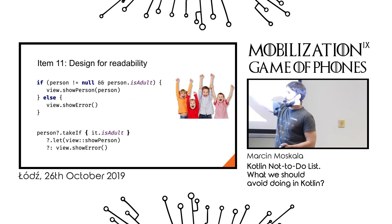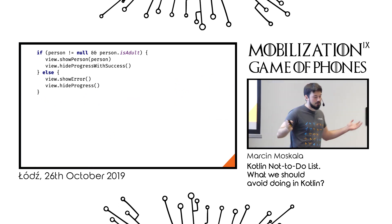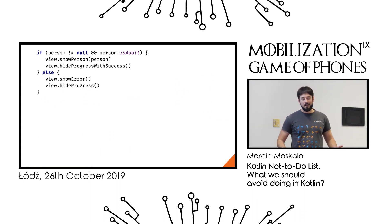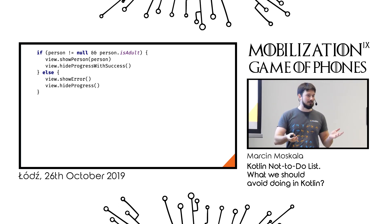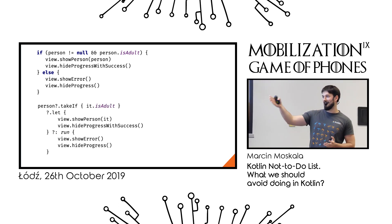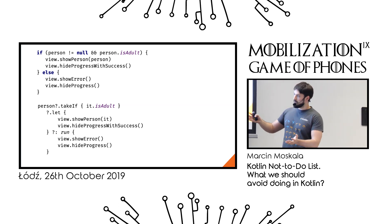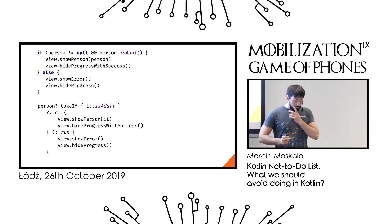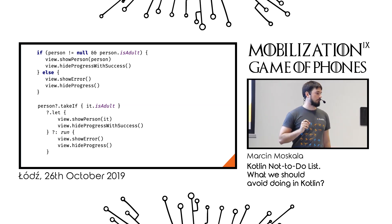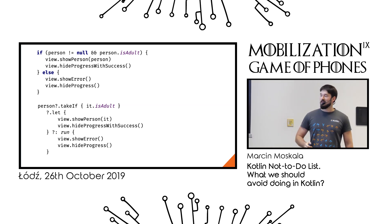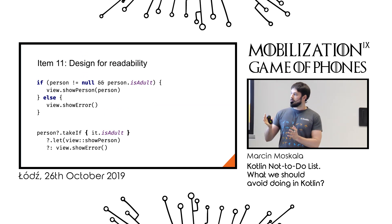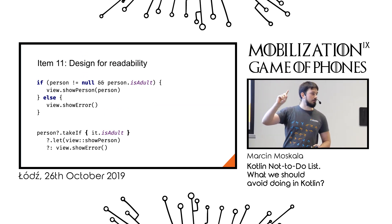Also think about modifying the code. If you want to add something to each branch: in the first case, simply add it to each branch. In the second case, you have a problem — you need to refactor. Your let can no longer use a bounded reference, and you need more than one expression on the right side of the Elvis operator, so you wrap it in run. You just made bad code even worse. The only benefit is you don't need to obfuscate it before shipping.